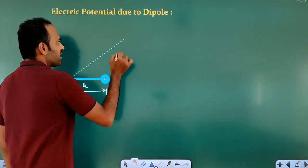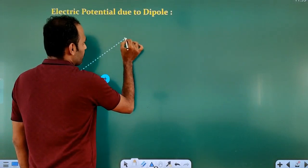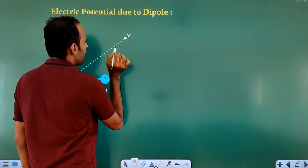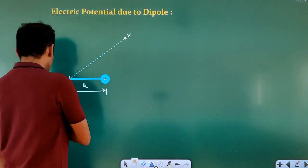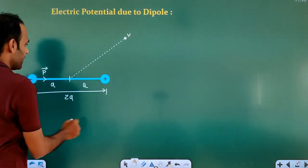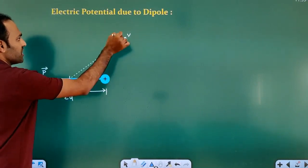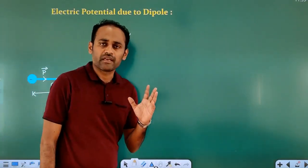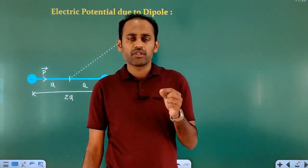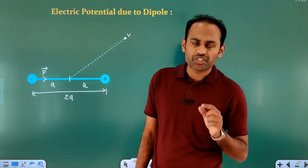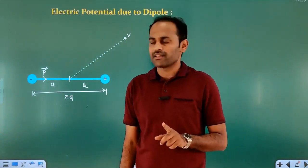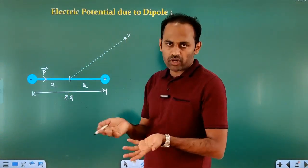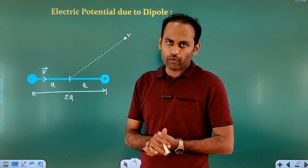We will take a point P here, and we want the electric potential at this point due to the entire dipole. The superposition principle tells us: however many charges there are, that many potentials will be present at that point.